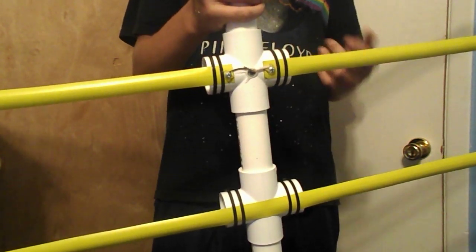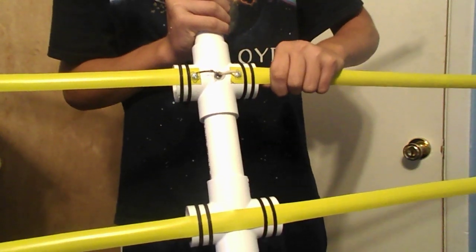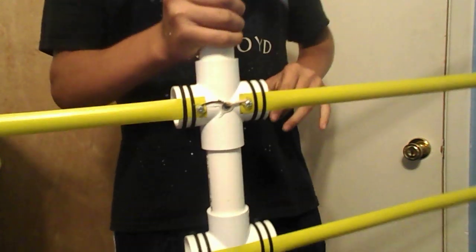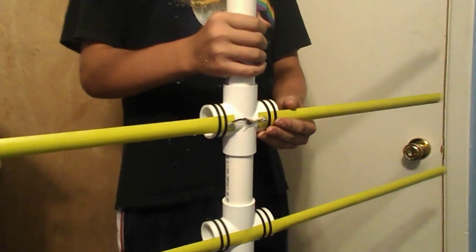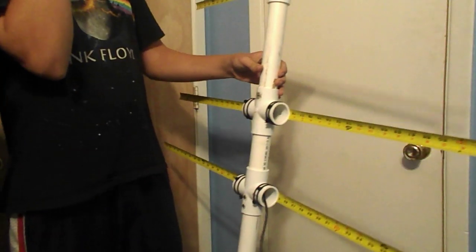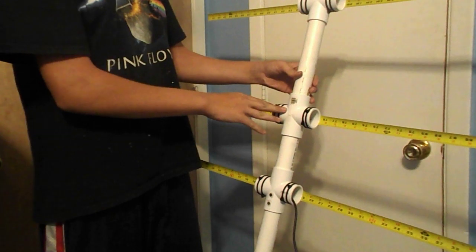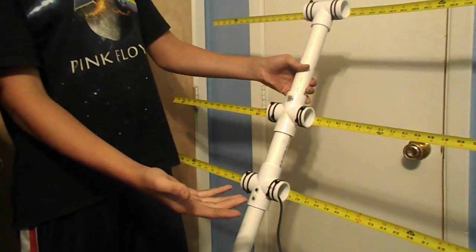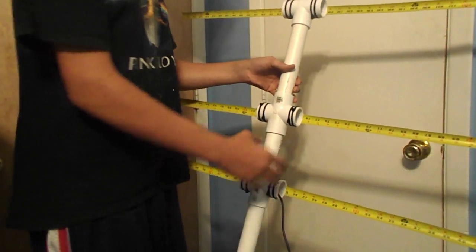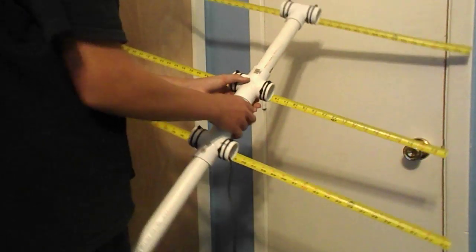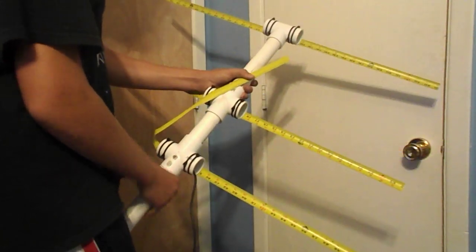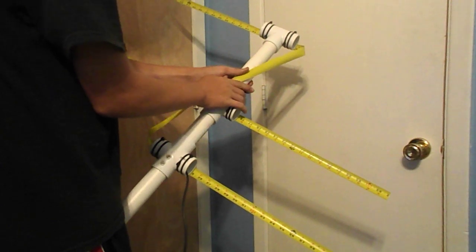But basically what it is is director, reflector, and then the driven element. The reason I used measuring tape was you can take and fold it in, I mean, whatever you want to do with it.